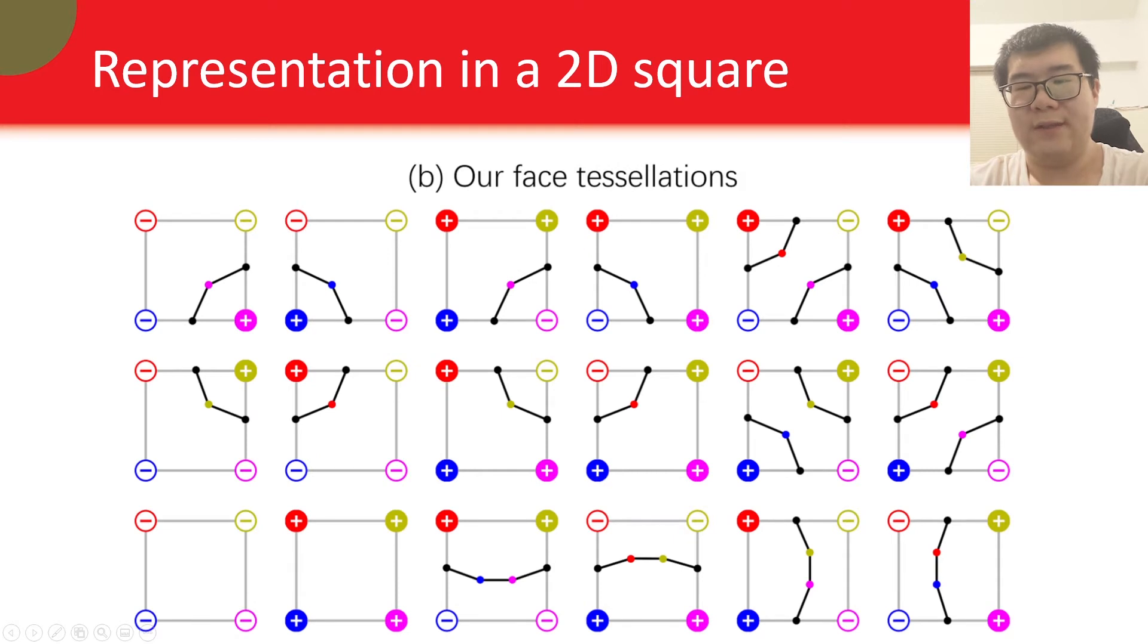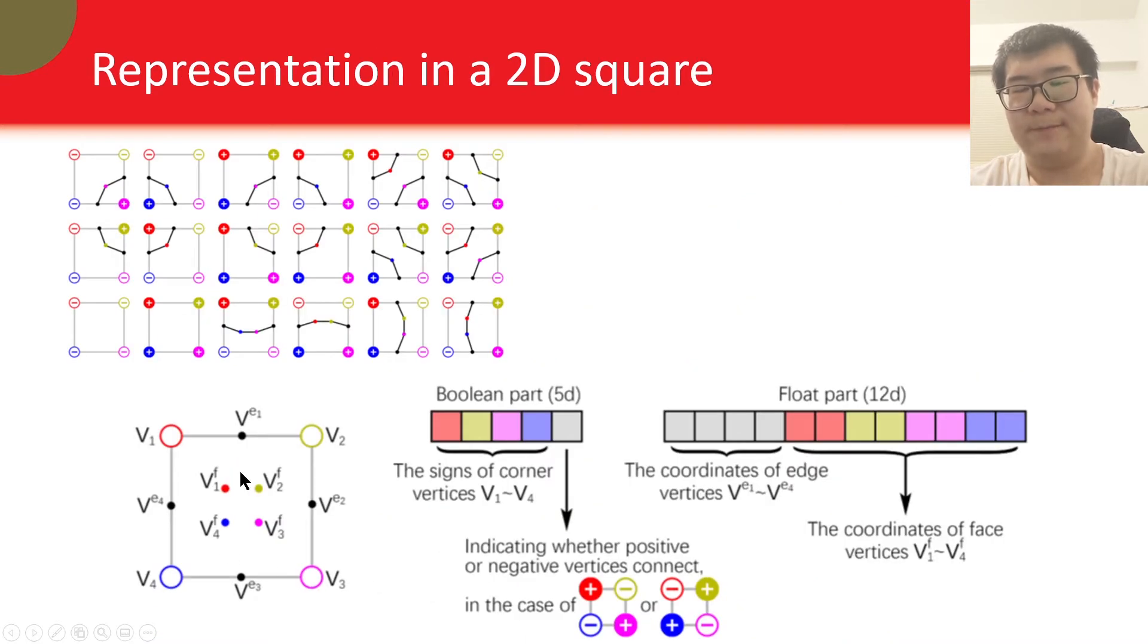So we add the additional vertices into the templates. Note that the additional vertices are corresponded with the corner vertices, indicated by the same colors. For example, this one here, and this one here. This design is to help us parameterize those cases more efficiently, as shown here. As you see with such design, no matter what topological case this square belongs to, we only need to store four face vertices and four edge vertices. Also, they are symmetric with respect to rotation, mirroring, and inverting the signs.